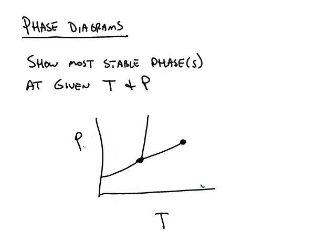For example, if the pressure is very low and the temperature is very high, we're over in this region, and the most stable phase would be a gas.